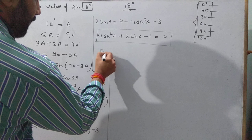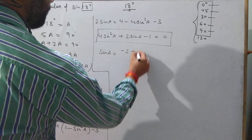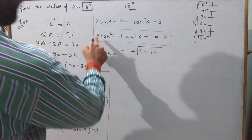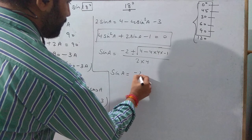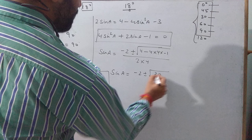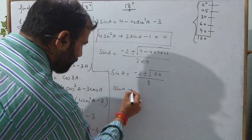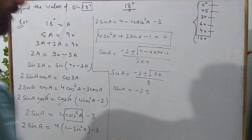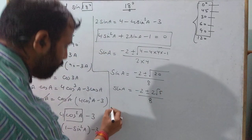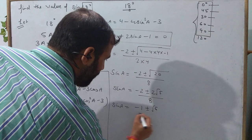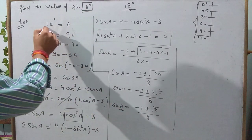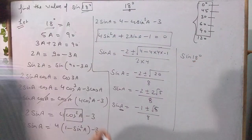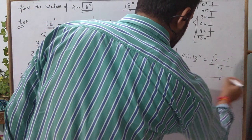The quadratic cannot be factorized, so we apply the quadratic formula (Shridharacharya). sinA = (−2 ± √(4 + 16)) / 8 = (−2 ± √20) / 8 = (−2 ± 2√5) / 8 = (−1 ± √5) / 4. Since a = 18° lies in the first quadrant where all values are positive, sin18° = (√5 − 1) / 4.